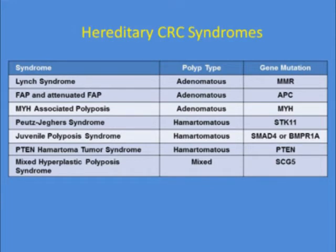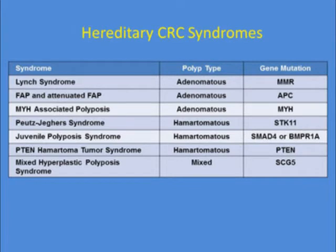In Lynch syndrome, FAP, and MAP, the precursor lesion is the adenoma. In PJS, JPS, PTEN hamartoma tumor syndrome — also known as Cowden syndrome — as well as mixed hyperplastic polyposis syndrome, those are hamartomatous polyps. There is commercial germline testing available for those syndromes.